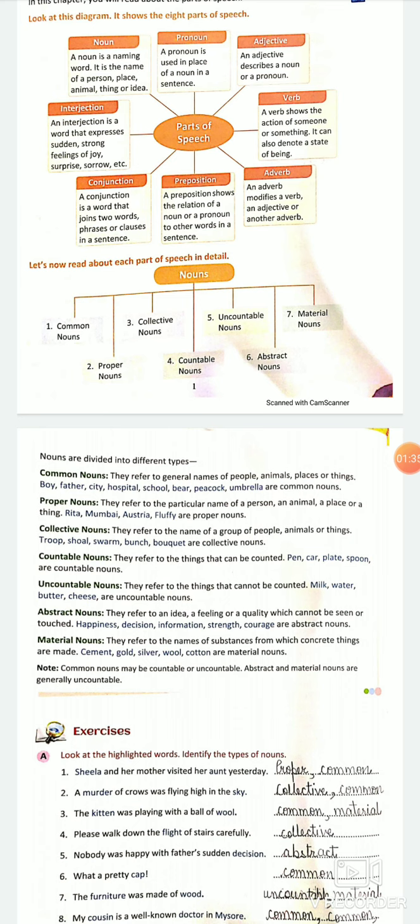Common nouns refer to the general names of people, places, animals, and things. Proper nouns refer to particular names. Like I said, city is a common noun, Karnal is a proper noun. Collective nouns refer to the collection of things, animals, or people.